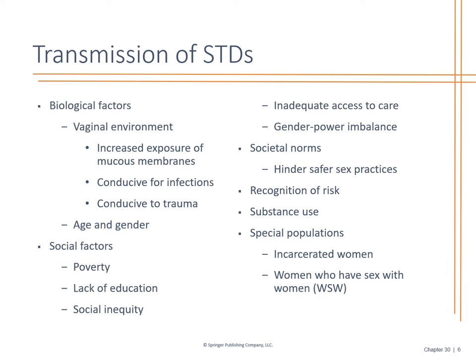Do they have access to healthcare? Have they had this issue for a while and finally made the trip to get checked out? Societal norms and safer sex practices are important. We talk about barrier methods and using protection to decrease high-risk sexual practices. Education is the key — understanding the risk based on the patient's age group, poverty level, and risk factors is all very important.